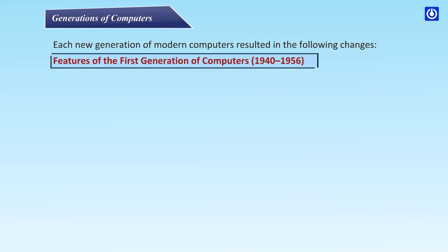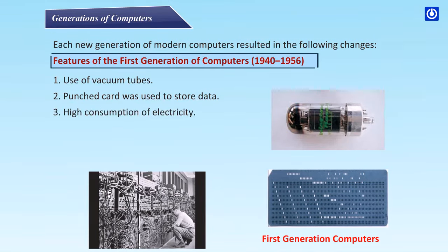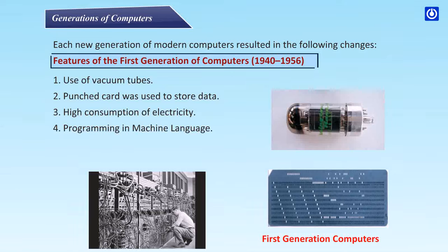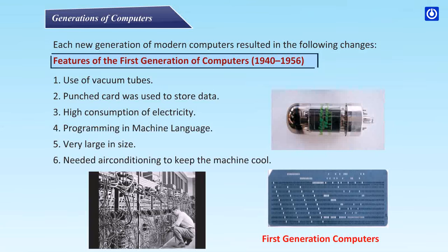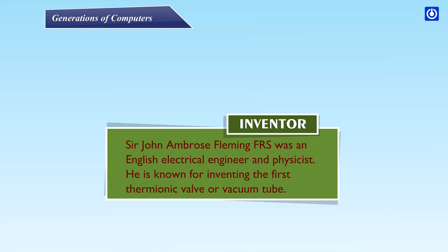Features of the First Generation of Computers (1940–1956): Used vacuum tubes; punched cards were used to store data; high consumption of electricity; programming in machine language; very large in size; needed air conditioning to keep the machine cool. Inventor: Sir John Ambrose Fleming, an English electrical engineer and physicist, is known for inventing the first thermionic valve and vacuum tube.